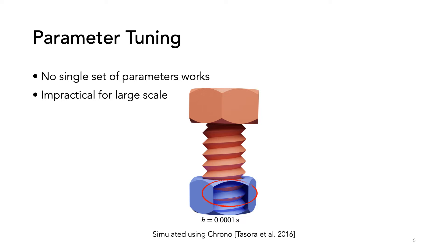This makes these methods difficult to use at a large scale, for example reinforcement learning or shape optimization, because each scene variation requires different parameters.